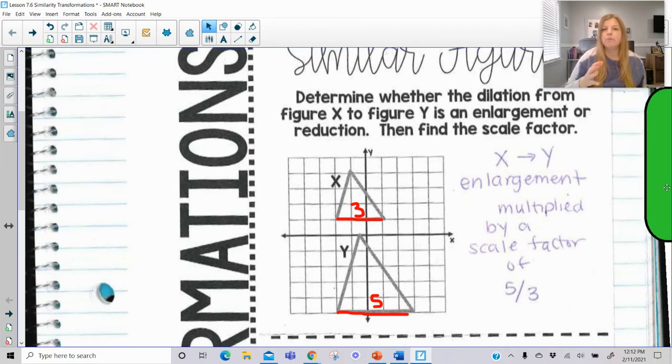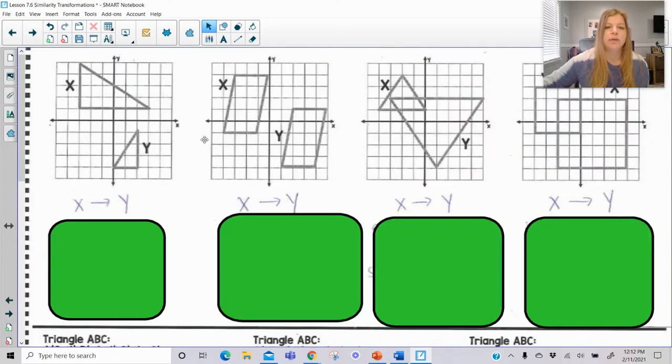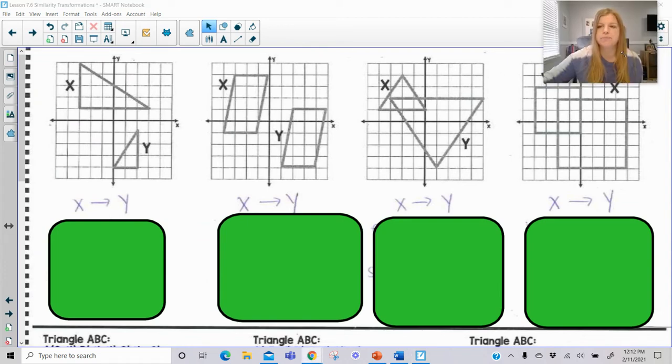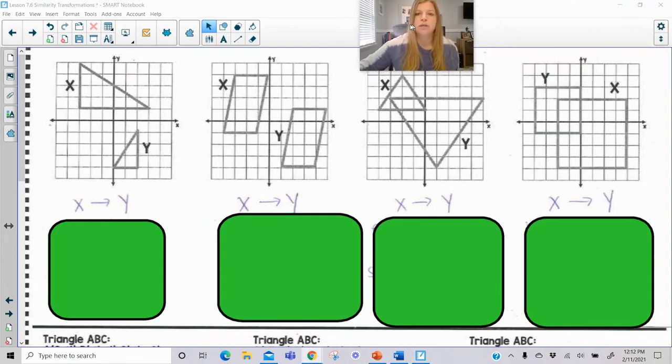Previously when we were talking about polygons and we said set up a scale factor, the scale factor would always go from the first figure to the second figure. But when you're talking about what you do to enlarge or make a figure smaller and you're multiplying by a scale factor, then it's actually the opposite way. So to go from 3 to 5 is actually multiplying by 5 thirds. Think about it if it was going from 3 to 6 - the scale factor is 2 because the way you go from a 3 to a 6 is you multiply by 2. So the way you go from a 3 to a 5 is to multiply by 5 thirds. It's the opposite way of thinking from when you're talking about the scale factor of similar figures.